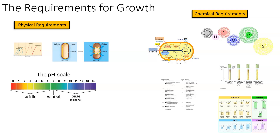When you look at the requirements for growth, you can see that there is a division between the physical and chemical requirements. The physical requirements are more like physical environmental issues that a bacteria cell needs to overcome in order to grow successfully. Chemical requirements would be things that they require that are elemental or molecular.